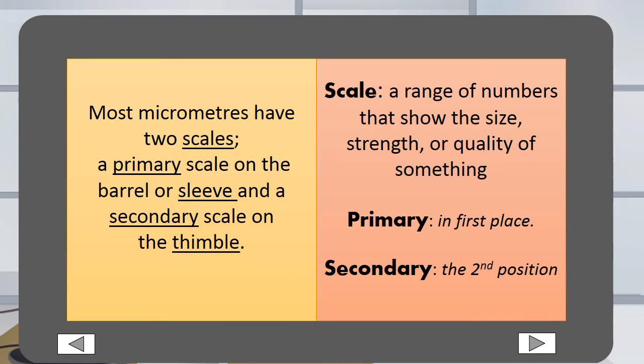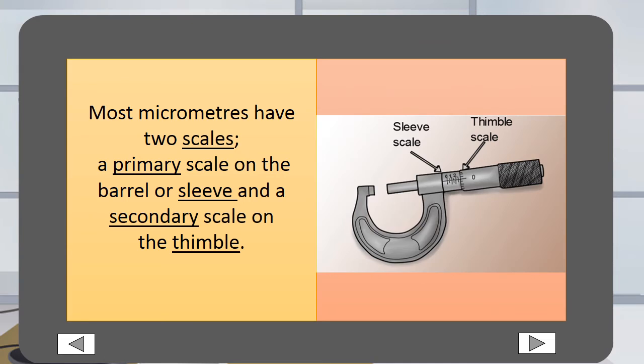A scale is a range of numbers that show the size, strength or quality of something. Primary is in the first place. Secondary is the second position. Here you can see a micrometer with the two scales. On the barrel or sleeve is the primary scale and the secondary scale is on the thimble.